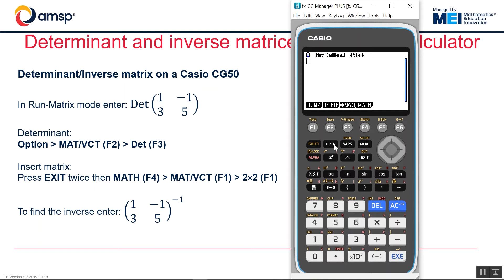First thing to do is option and the matrices vectors menu F2. Number three F3 is the determinant. Press exit twice to get me back up to the top and then I can enter a matrix directly by choosing math on F4 and the matrix vector on F1. And I want the 2 by 2.